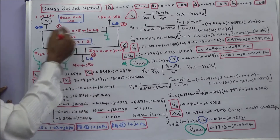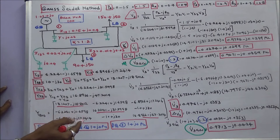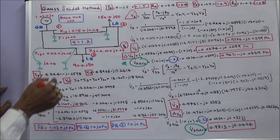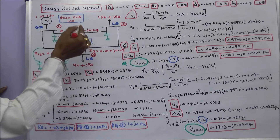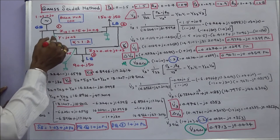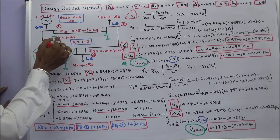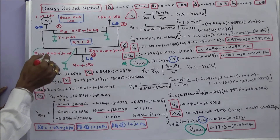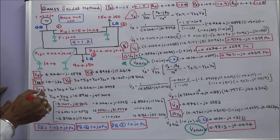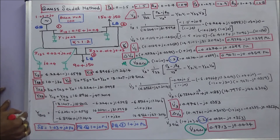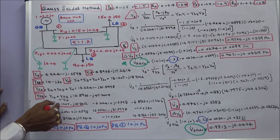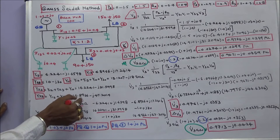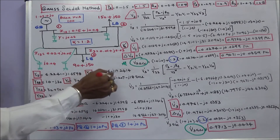Here the half-line charging impedances are given. Y11 is equal to Y12 plus Y13 plus the half-line charging admittances j0.06 plus j0.04. So Y11 is equal to 13.1207 minus j18.8012.